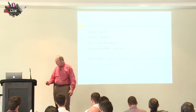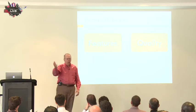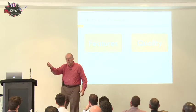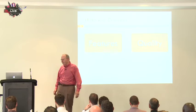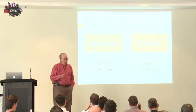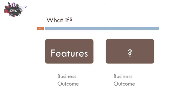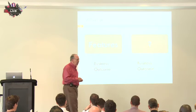One of the problems we've had is this is the trade-off equation we give to our business partners: do you want more features, or do you want higher quality — a lower McCabe cyclomatic complexity metric? What are your business partners going to say? We're asking them to trade off a business outcome for a technical outcome, and it's never going to happen. What if we could change the equation — trade off a business outcome against a business outcome?